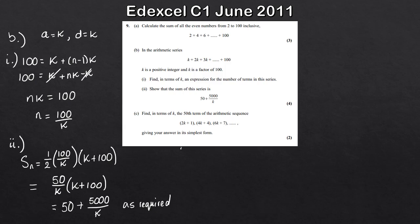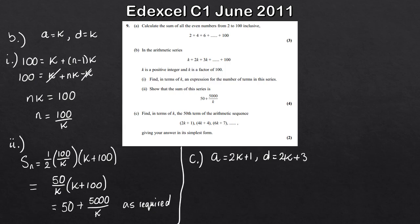Finally, part C. We're given a new sequence where the first term is 2K plus 1, so A equals 2K plus 1. To work out the common difference, we subtract the first term from the second: (2K plus 3) minus (2K plus 1) equals 2. You can verify this with the third term minus the second, and you'll get 2 again. We want to find the 50th term.